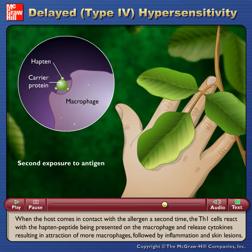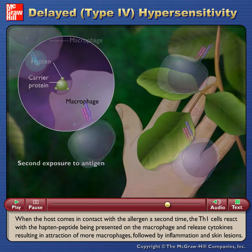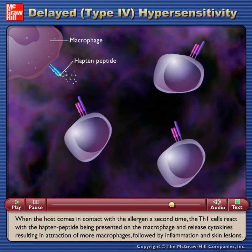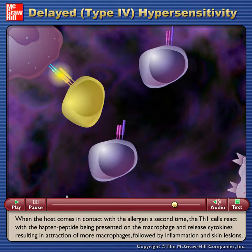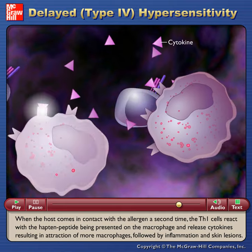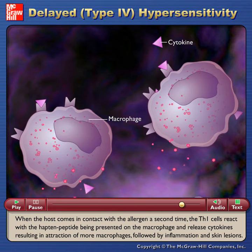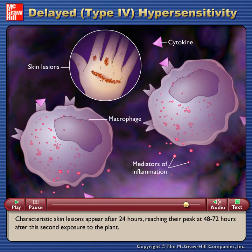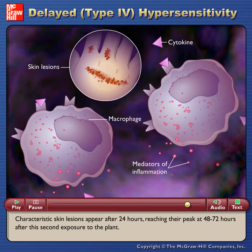When the host comes in contact with the allergen a second time, the Th1 cells react with the hapten peptide being presented on the macrophage and release cytokines, resulting in attraction of more macrophages, followed by inflammation and skin lesions. Characteristic skin lesions appear after 24 hours, reaching their peak at 48 to 72 hours after the second exposure to the plant.